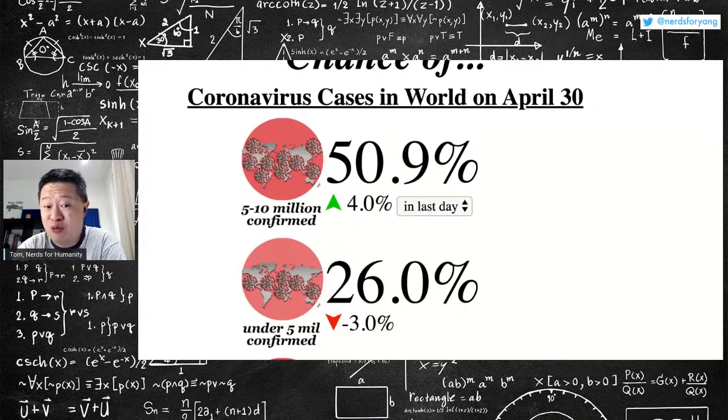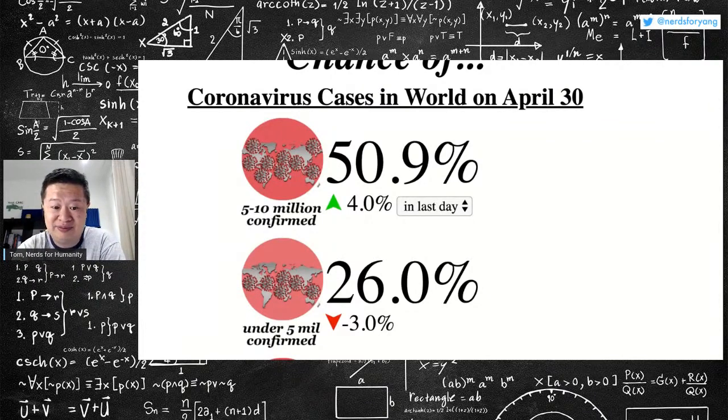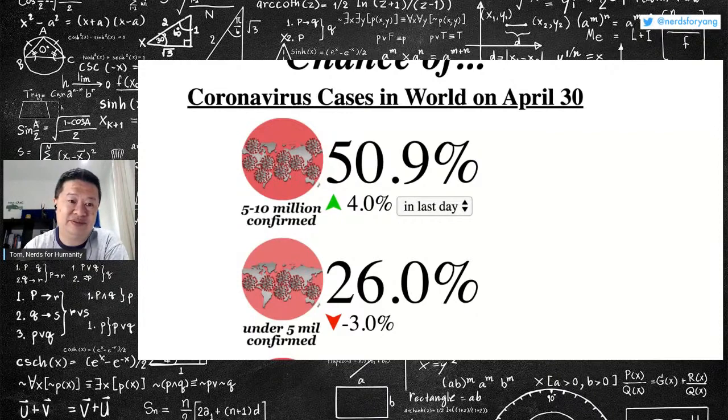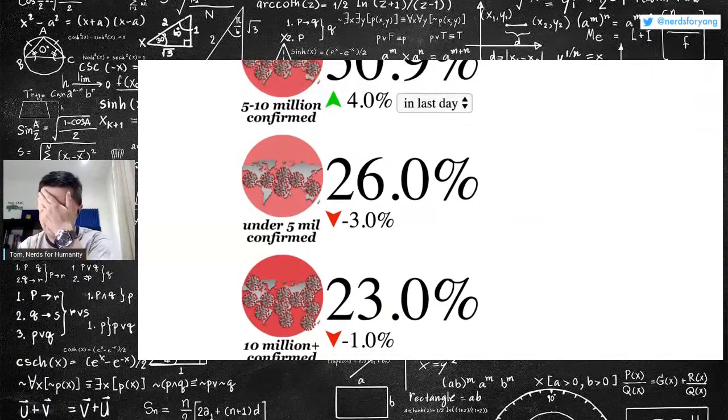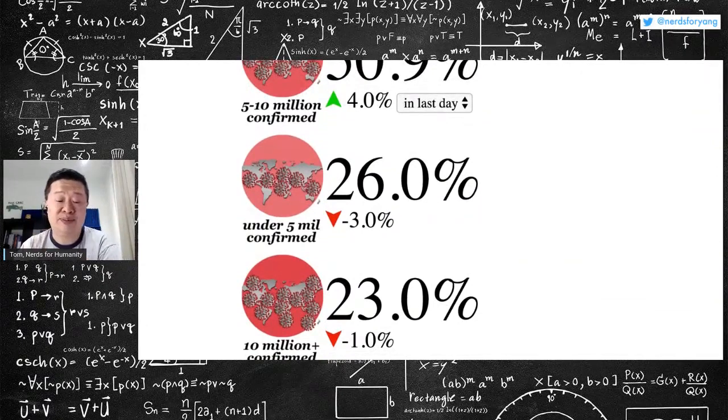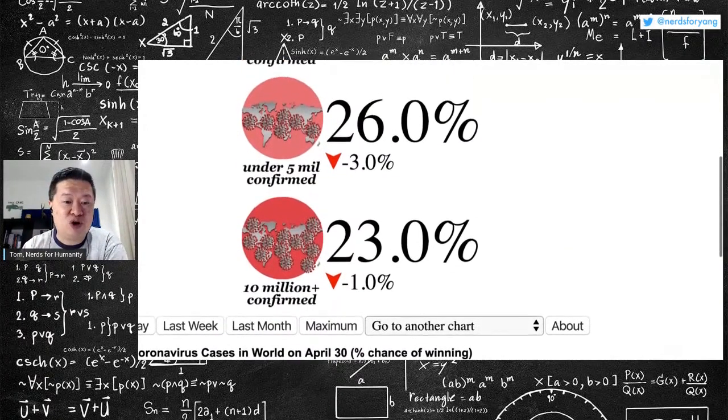So we're right now at 1 million, and gamblers are assuming in four weeks we'll be at least 5 million. And unfortunately, these betting markets are pretty accurate because there's an incentive to try and be right here.